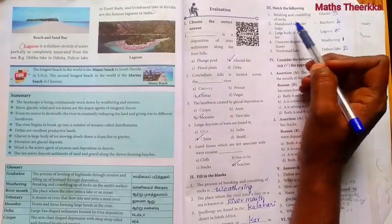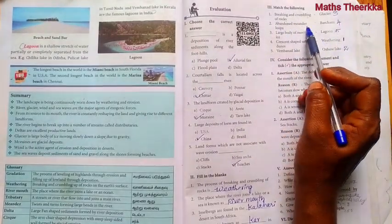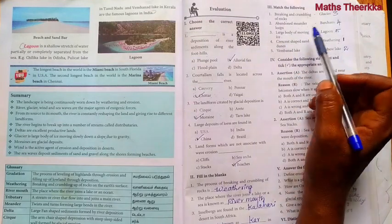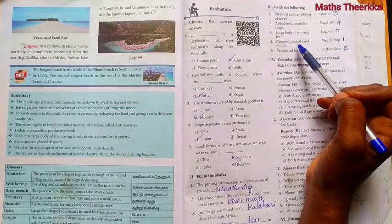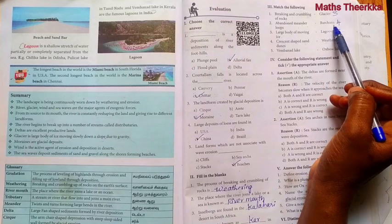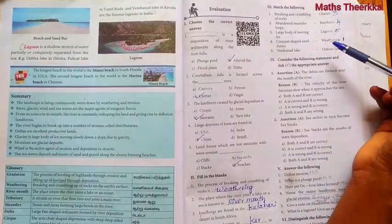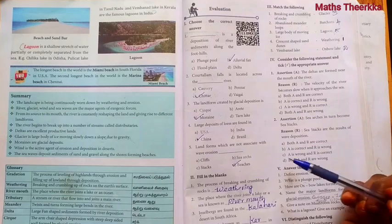Breaking and crumbling of rocks weathering, abandoned meander loops oxbow lake, large body of moving ice glacier, crescent shaped sand dunes barchans, Vembanad Lake lagoon. Match the answers.